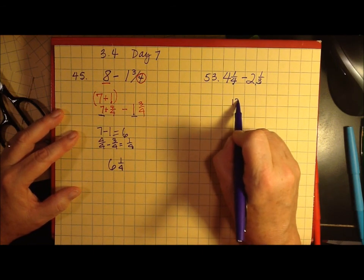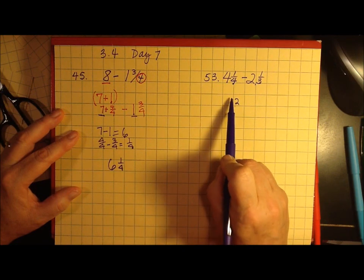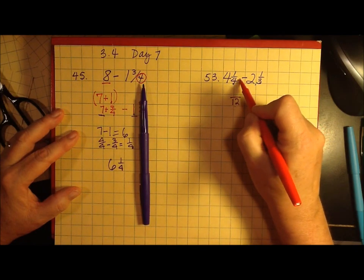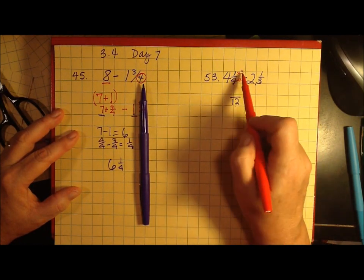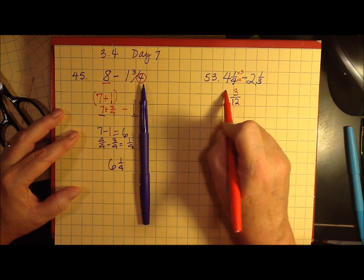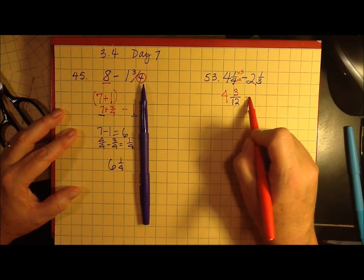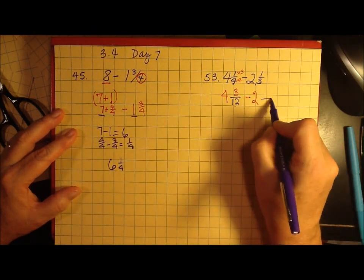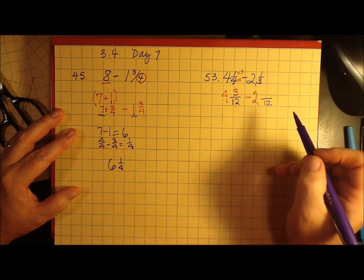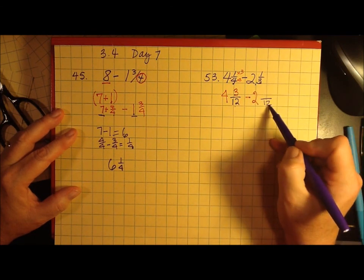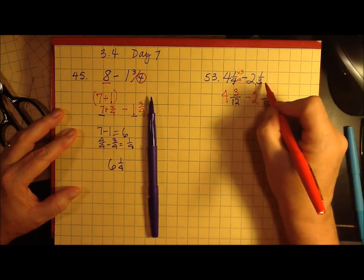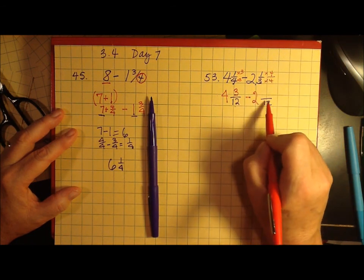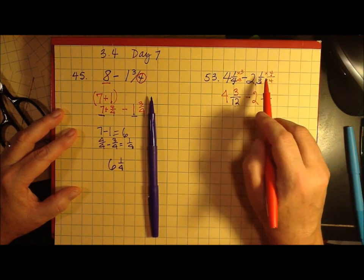So let's see what happens now. To get 4 to turn into 12, I have to multiply it by 3. What I do to the bottom, I must do to the top. 3 times 1 is 3. So I have 4 and three-twelfths minus 2, and to turn one-third into twelfths, to get 3 to turn into 12, I multiply it by 4. And what I do to the bottom, I must do to the top. So this is 2 and 1 times 4 is 4.